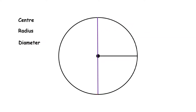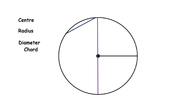Now here we have a segment which joins two points of the circle. A segment which joins two points of the circle is called a chord of the circle. So this segment is a chord of the circle. Now you can see that this diameter is also a chord, because it joins two points of the circle.